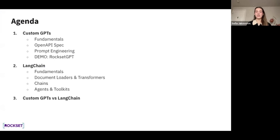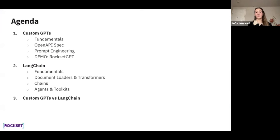Today's agenda: we'll start off with custom GPTs, discuss the fundamentals, then go into OpenAPI specs, touch on prompt engineering, and do a demo where we'll build Rockset GPT as an example. Then we'll discuss LangChain — for those who don't know LangChain, don't worry, we'll do a quick crash course covering the fundamentals, document loaders and transformers, chains, agents and toolkits, and then close with a custom GPT versus LangChain comparison. This should be a fairly quick workshop but it is packed full with information.